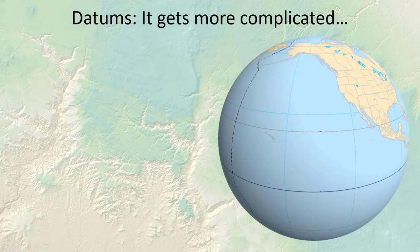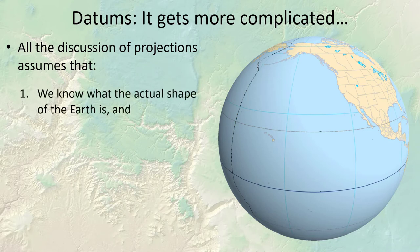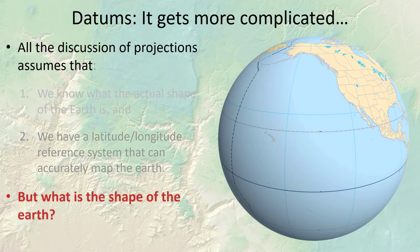Alright, enough introduction — let's talk about datums. All our discussion about projections assumes that we actually know the true shape of the earth, and that we have a latitude-longitude coordinate system that can accurately map it. But this raises a question: what is the actual shape of the earth? We have to have something to project from, so what is that thing?